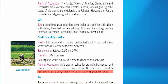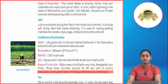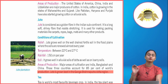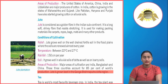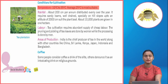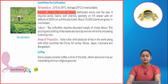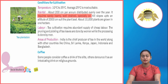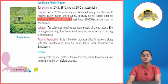Tea is the world's most favourite beverage crop. In India, the tea plant was introduced by British officer Robert Bruce in Assam in 1829. Conditions for cultivation — Temperature: 10 to 35 degrees Celsius; average 25 degrees Celsius is most suitable. Rainfall: about 200 cm per annum, distributed evenly over the year. It requires sandy loam, well-drained soils, especially on hill slopes up to an altitude of 2000 metres. About 10,000 plants are grown per hectare.